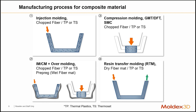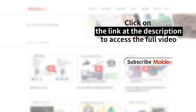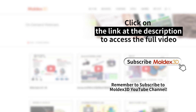Over the last couple of decades, resin transfer molding — RTM — has really started to emerge as a technology that allows us to more or less guarantee the fiber orientation and the mechanical properties that we desire. The flow of material through a resin mat or a fiber mat is key to this process.